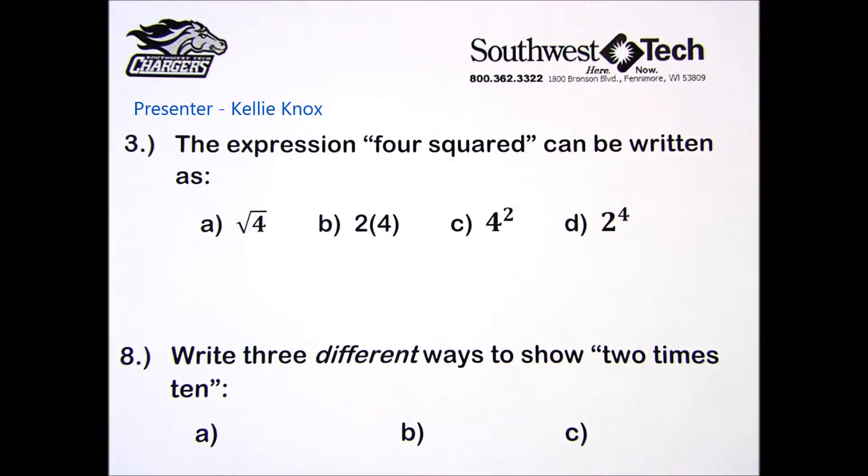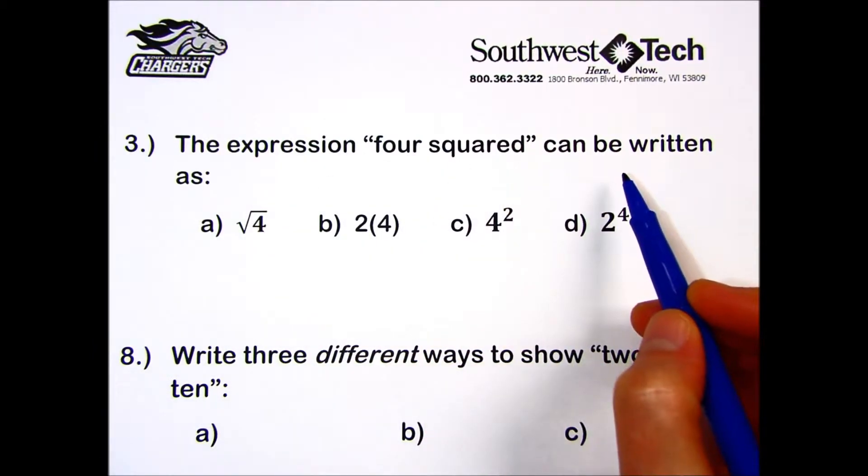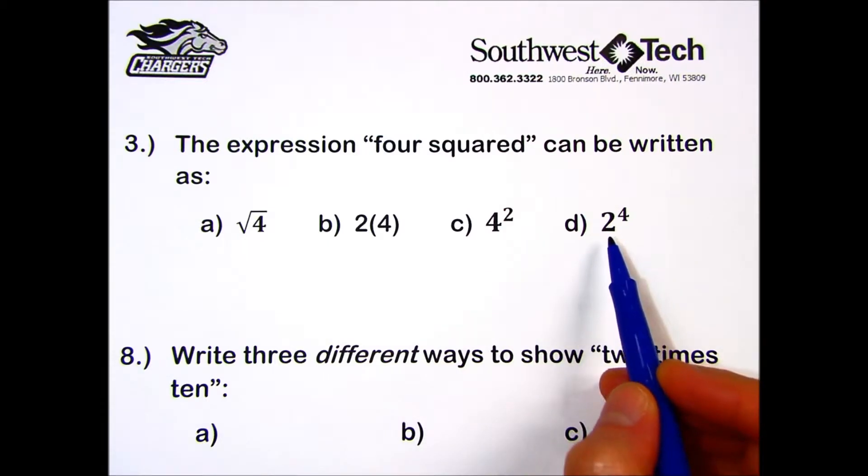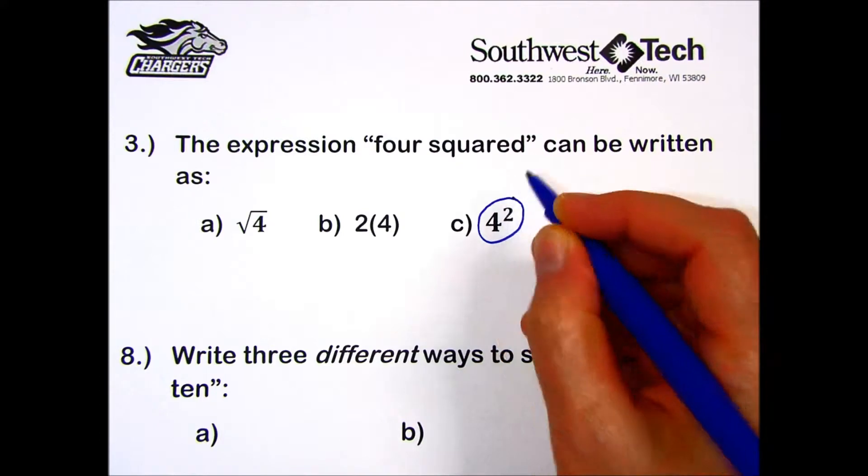In Practice at One, we learned some new mathematical symbols and notation. Let's try a few together. Number three: the expression 'four squared' can be written as which of these choices with mathematical symbols? And the answer is C.